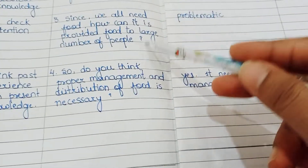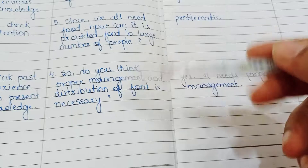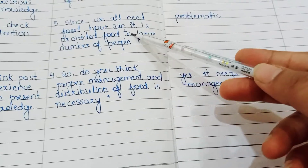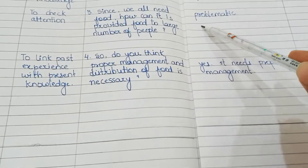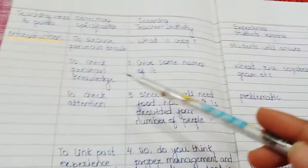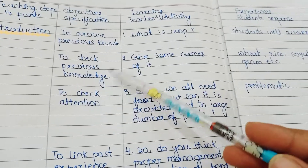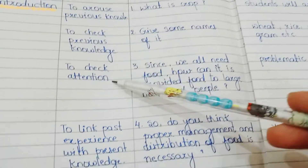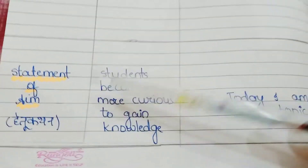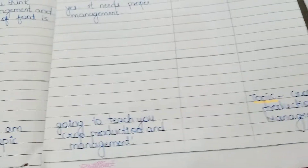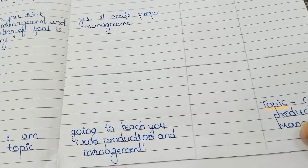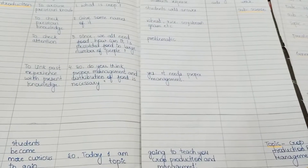You can exchange the order of these questions as needed — the problematic question should ideally be asked last. Here you can see the objectives and specifications. After that, we have to announce our topic. Here you can see the overall look of that section, and we also write the topic here.